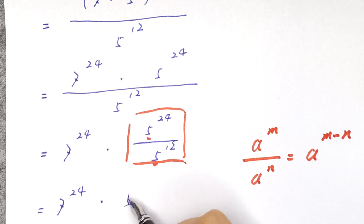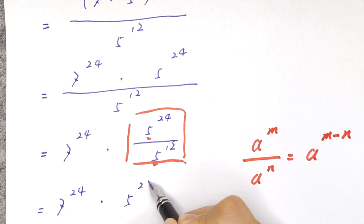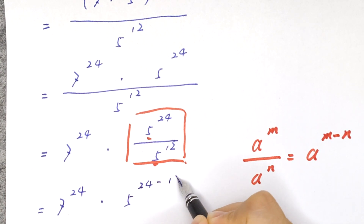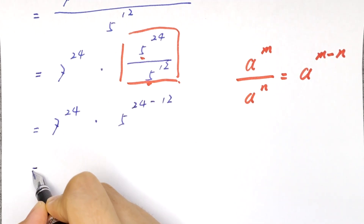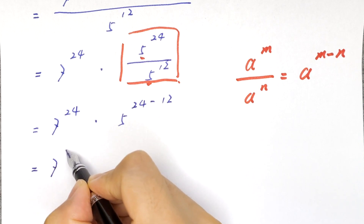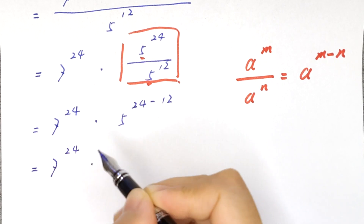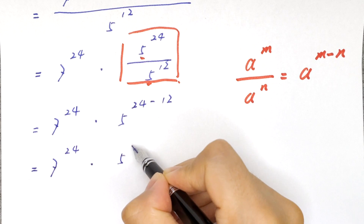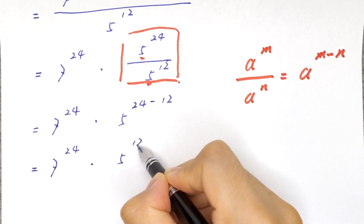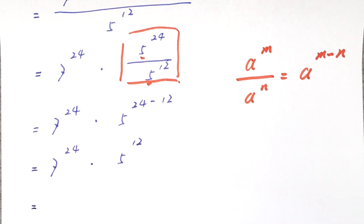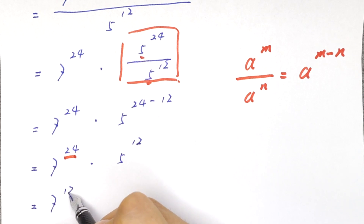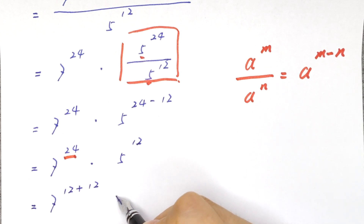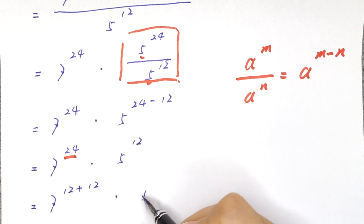So here, 5 to the power of 24 minus 12 equals 7 to the power of 24 times 5 to the power of 12. Now, 24 is the same as 12 plus 12, times 5 to the power of 12.